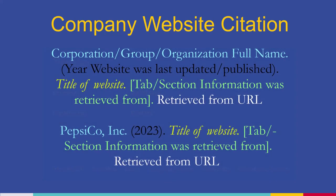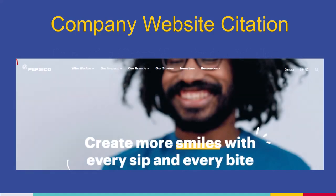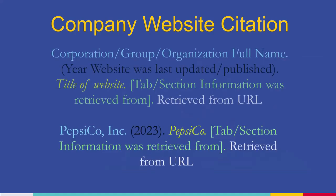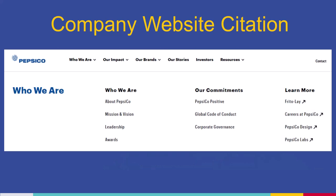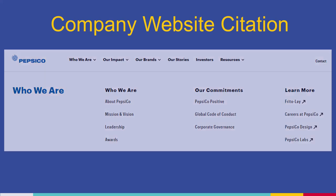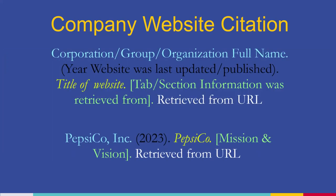Then, we need to find our website title. Finding the title of your company's website can be confusing, but in practice, this tends to be the common name of your company. For PepsiCo Inc., the title of the website is just PepsiCo. In the brackets, we will put the name of the tab or section the information was retrieved from. In the case of PepsiCo, that will be Mission and Vision.